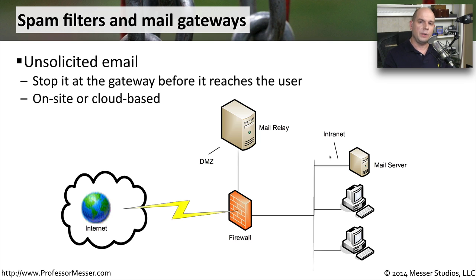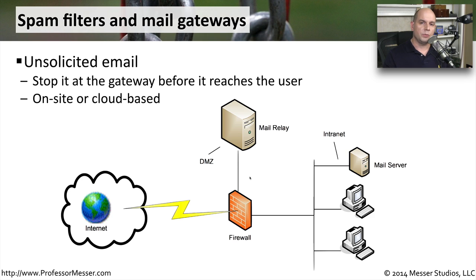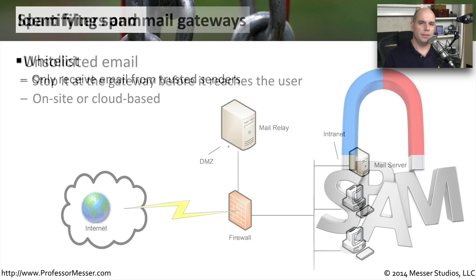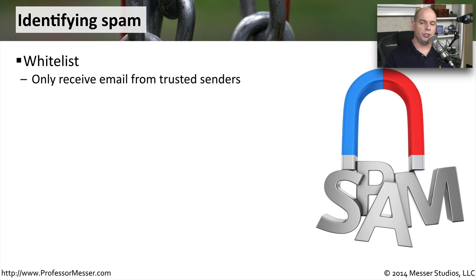This is a great place to stop the spam. If we stop it at the mail gateway or the mail relay, we can prevent it from ever showing up in your inbox. There are a number of different ways to do it — some people do it on the mail relay itself, others prefer to outsource that to the cloud. Many companies provide email filtering before it's ever sent to your mail relay, so you can spend time managing other parts of your email rather than dealing with spam filtering. There are many methods that spam filters use to determine whether an email is legitimate or simply unsolicited spam.